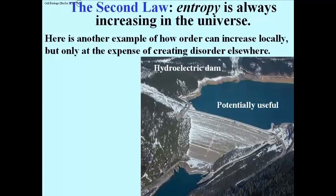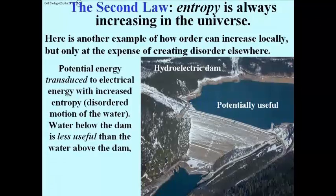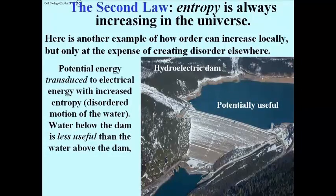Here's another example of how order increases locally, but at the expense of creating disorder elsewhere. This is a hydroelectric dam. The water in the lake has potential energy. The potential energy of this water will be transduced to electrical energy as it flows through the dam, but with increased entropy.